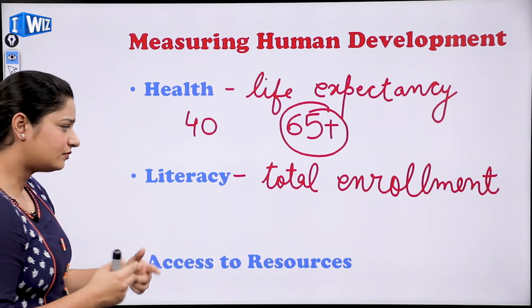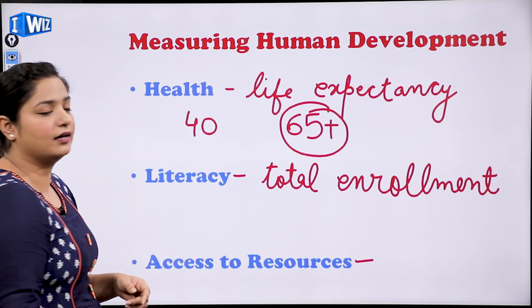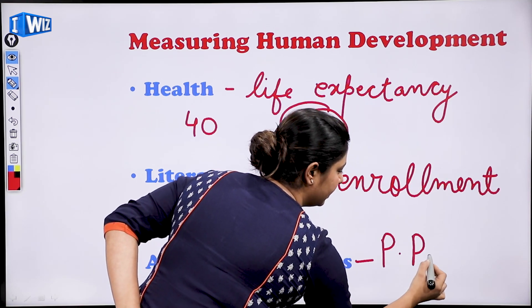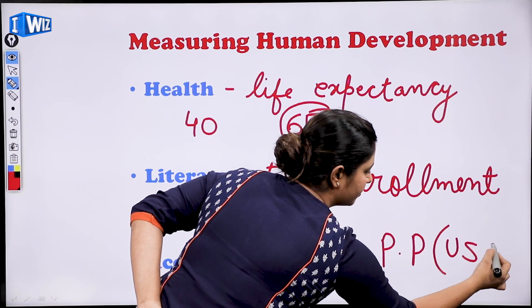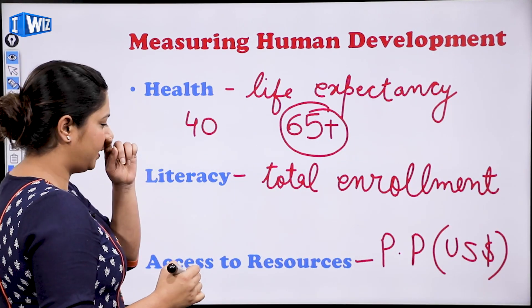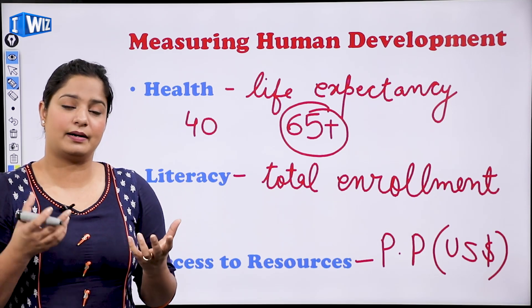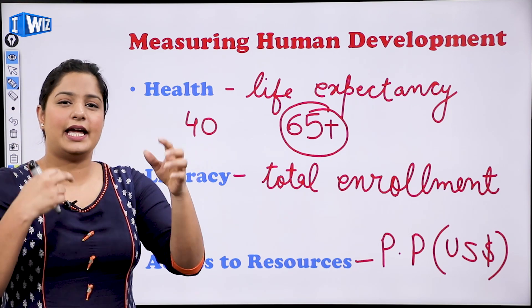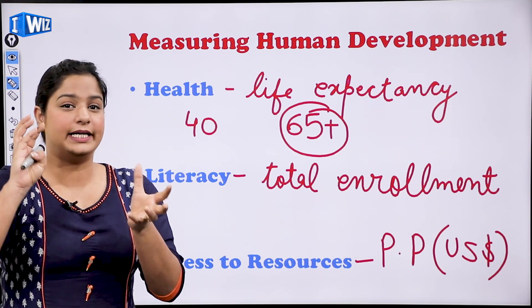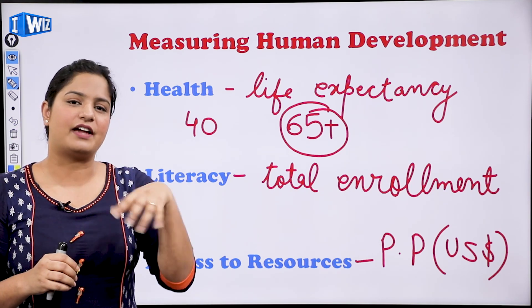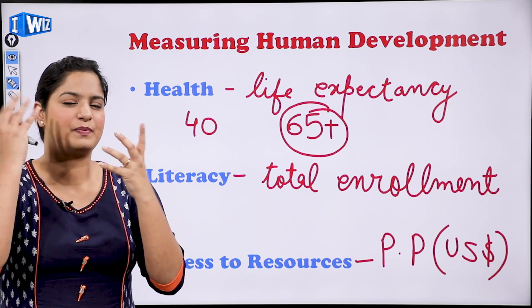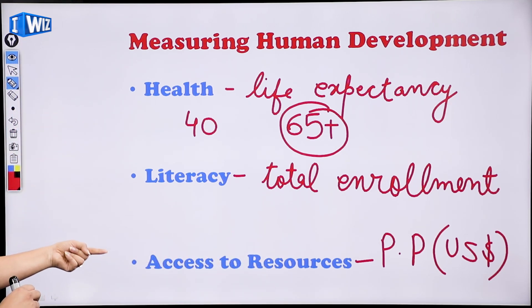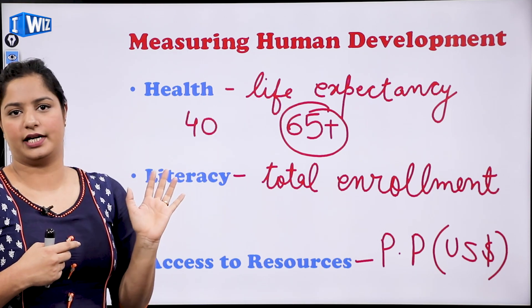Next, access to resources — this means purchasing power, which is generally measured in US dollars. Purchasing power refers to whether people have money to purchase basic needs. For example, how many rupees do people need to survive in a day? This is the access to resources parameter. So these are the three main parameters used to measure human development.